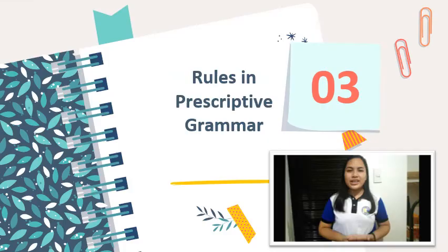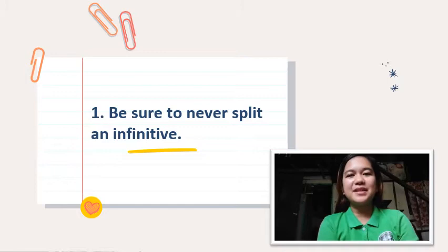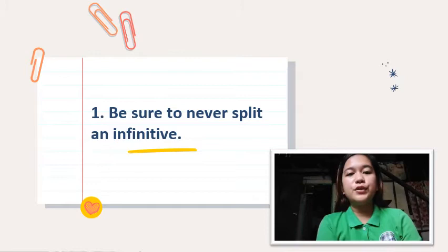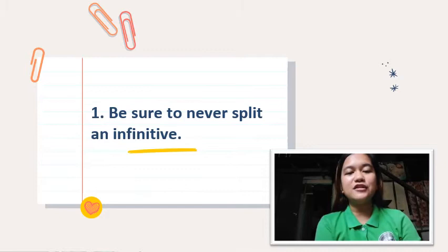Here are the rules in prescriptive grammar. Rule number one: be sure to never split an infinitive. This is a rigid rule that should not be broken. A split infinitive occurs when there is an adverb between two parts of an infinitive. In this rule, we should never split an infinitive — try to place the adverb either before or after the phrases they modify whenever possible. So instead of saying 'What are you waiting for?' we could rephrase it into 'For what are you waiting?'